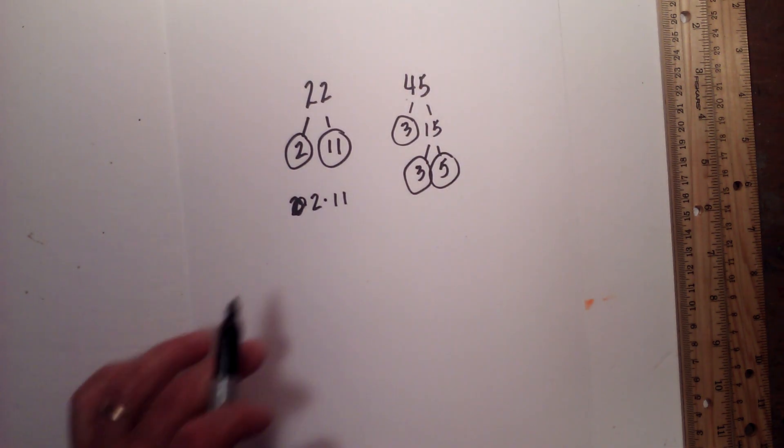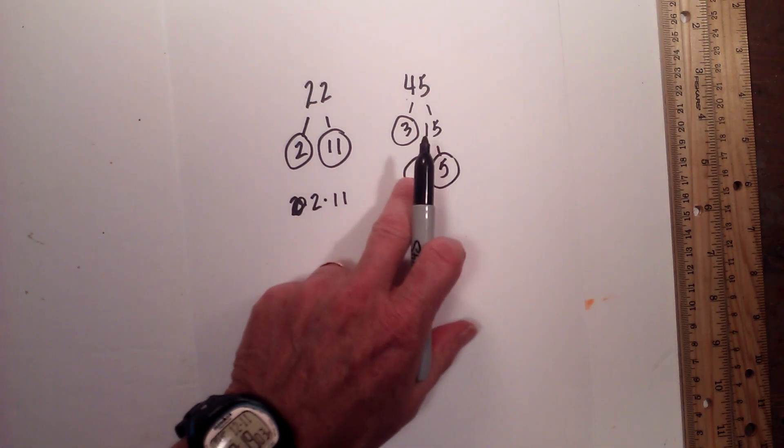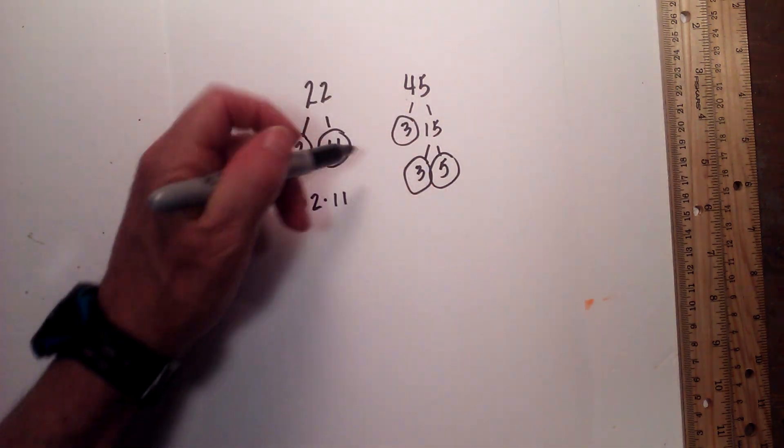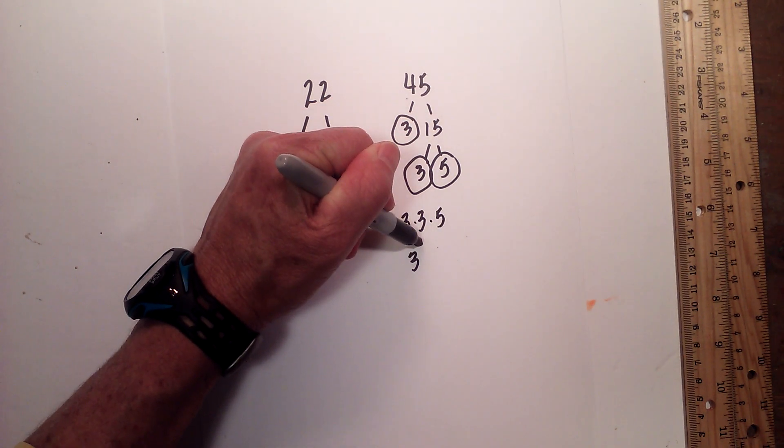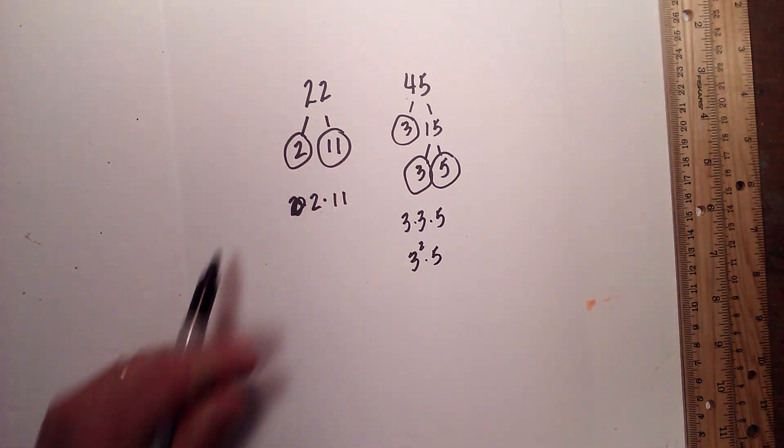So the prime factorization... I'm finished because I'm down to just prime numbers. Prime factorization of 45 is 3 times 3 times 5, or 3 squared times 5.